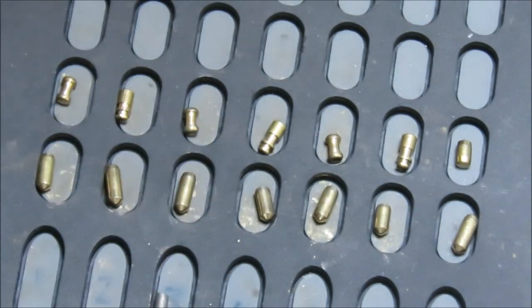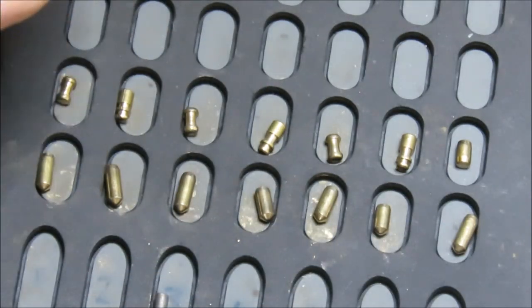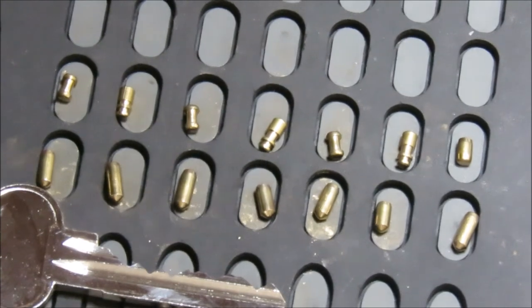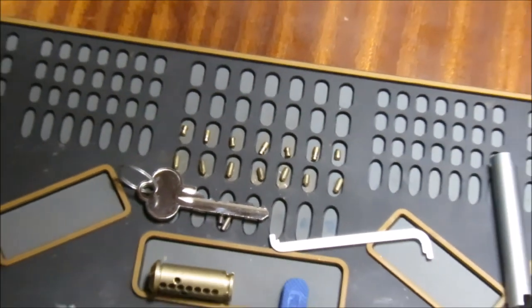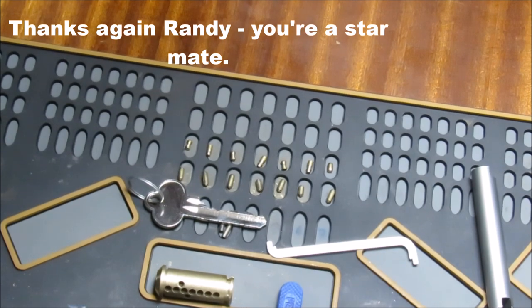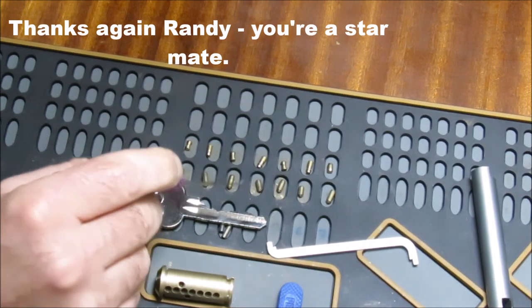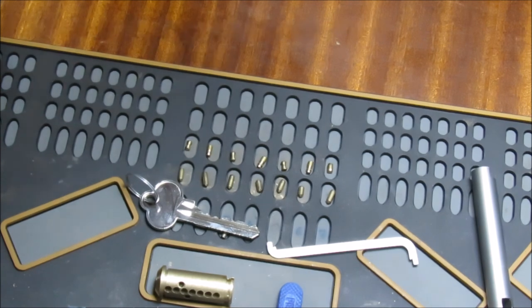All right. So there we go, folks. A seven-pin no-name Scandinavian oval. Let's just zoom back out again. Really interesting lock to pick. My name's Michael Maynard. This is Gorilla Picking. And I hope you guys have enjoyed watching the guts of this lock. Thanks for watching, guys.